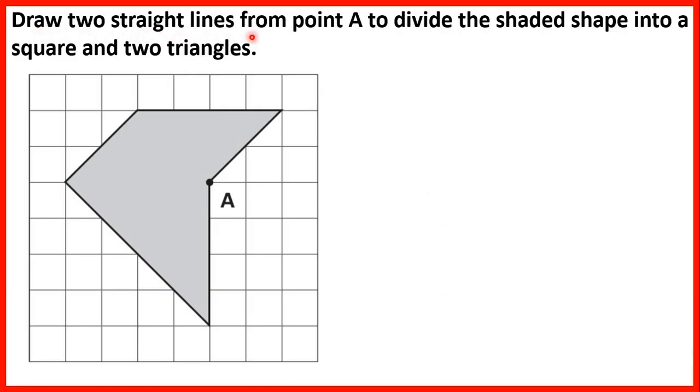Draw two straight lines from point A to divide the shaded shape into a square and two triangles. We can spot that this angle here is a right angle, and squares have right angles in the corners. So from point A, we can draw a line here and a line here, and that creates a square and two triangles. We have a square here because all of the sides are the same length and we have right angles in each corner. And we have two triangles because we've got two three-sided shapes here.